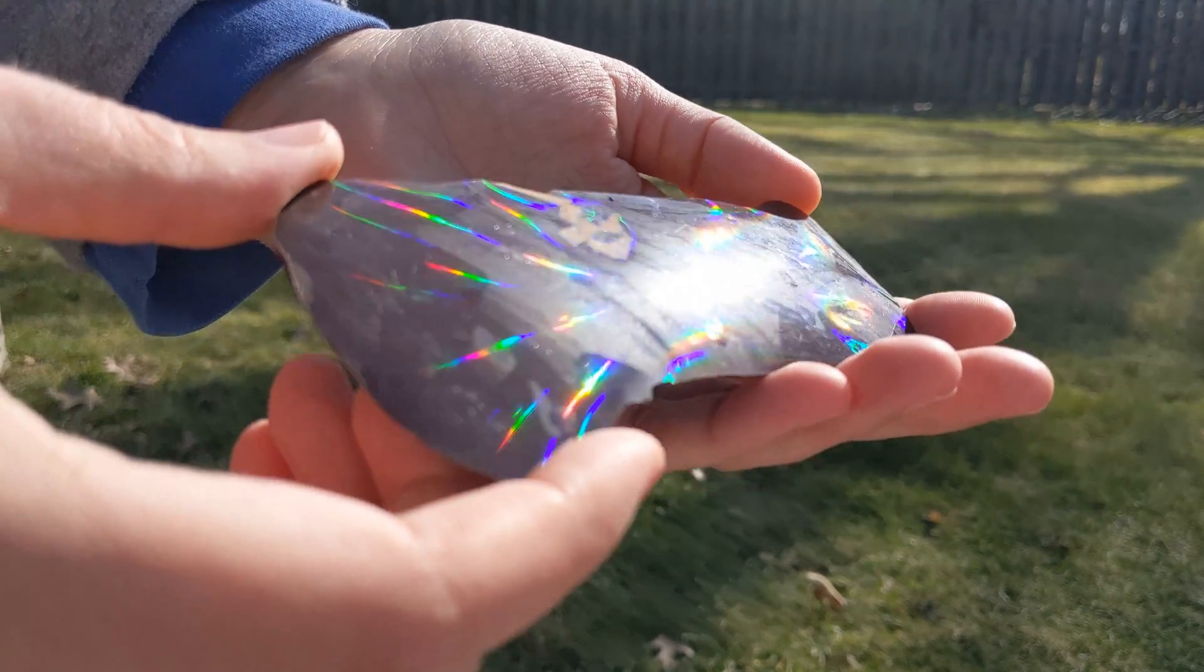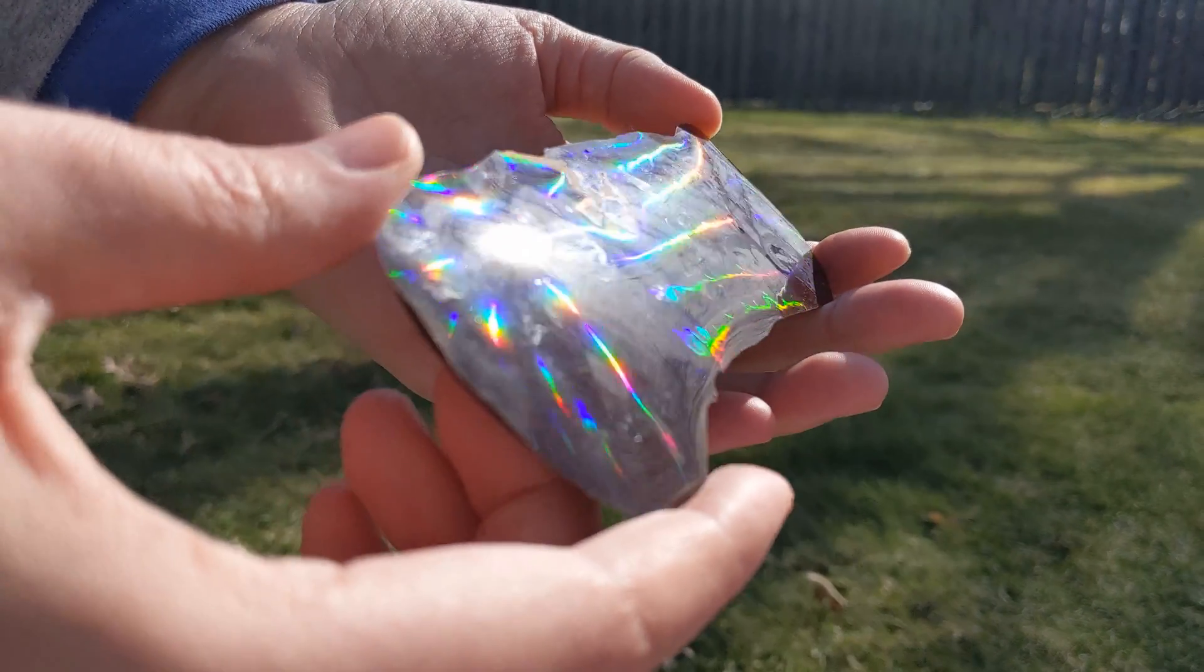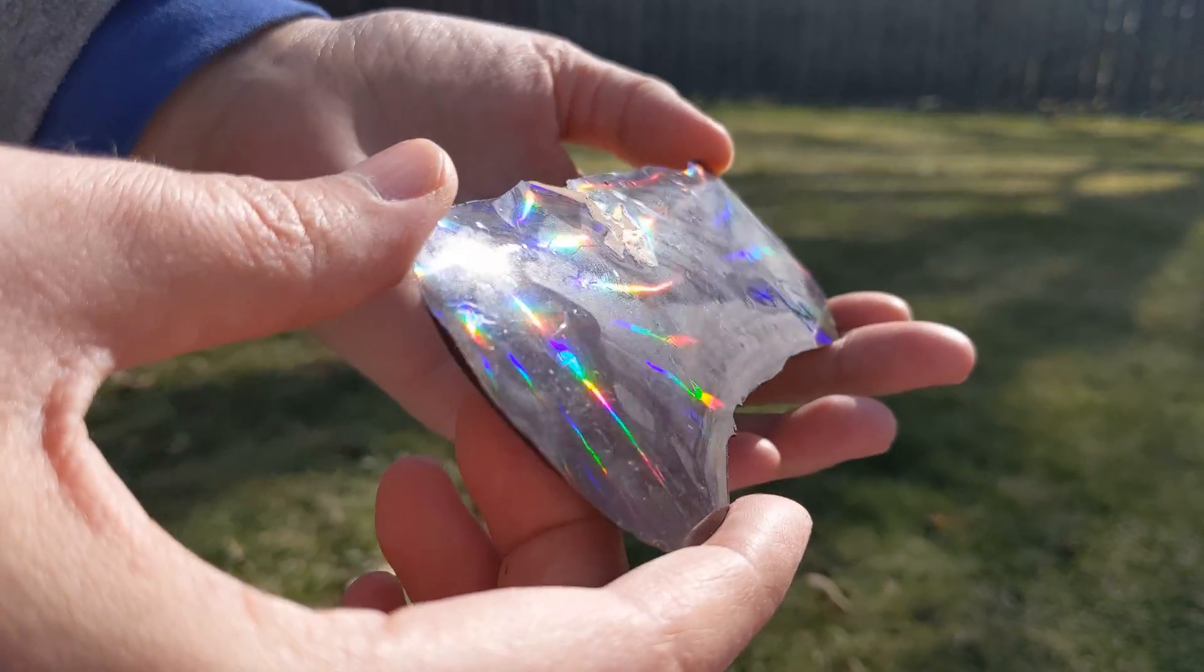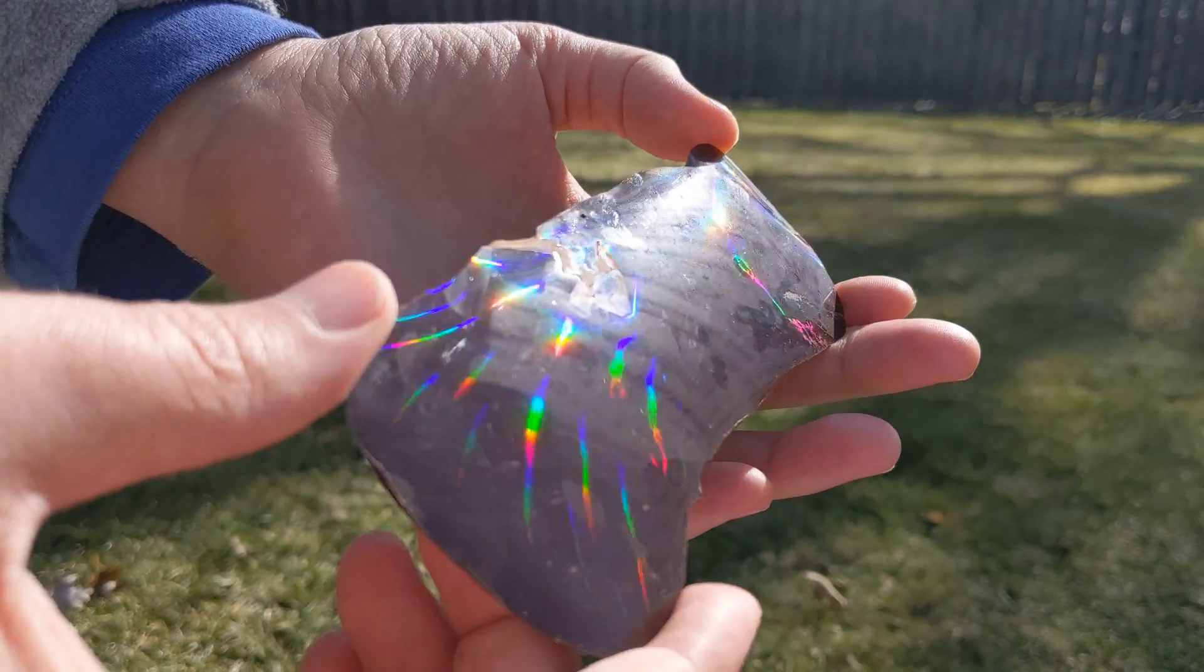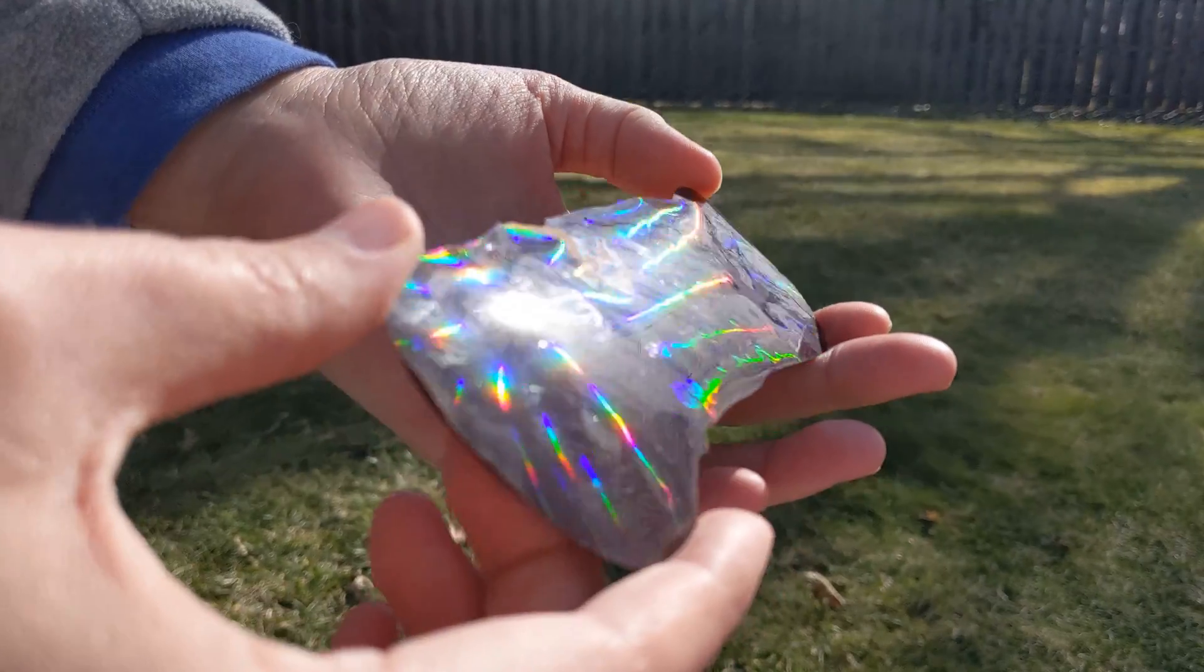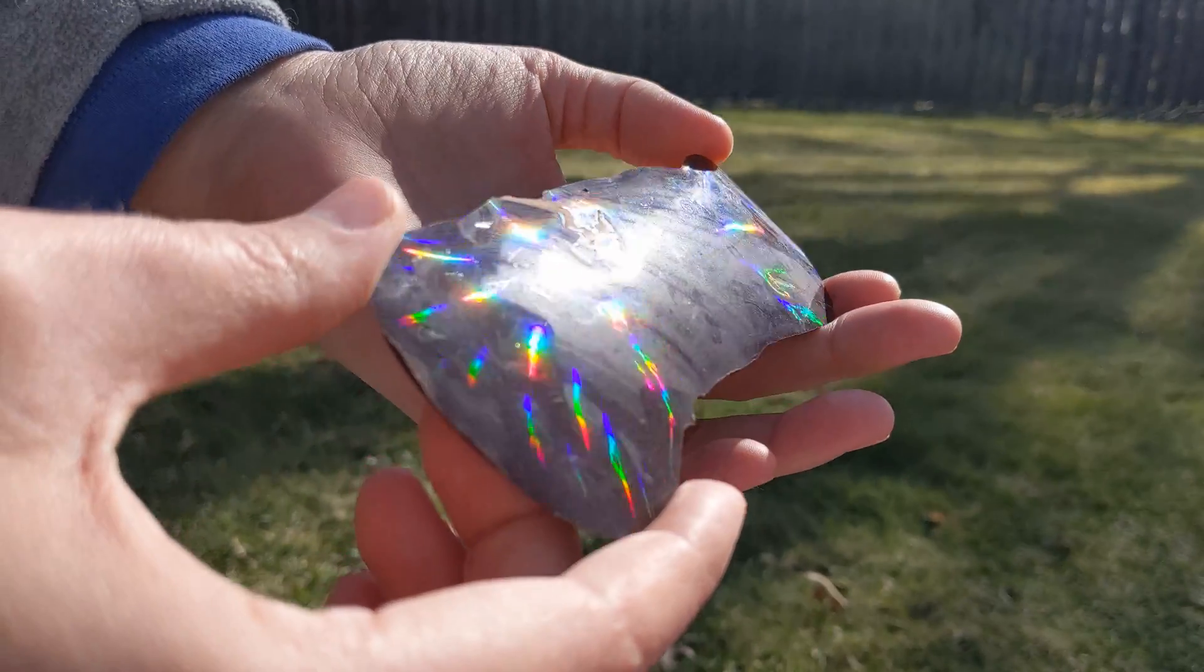This is the moment of truth. Look at this! The chocolate is now a diffraction grating. Sunlight is dispersing into rainbows all over the surface of the chocolate. So success!